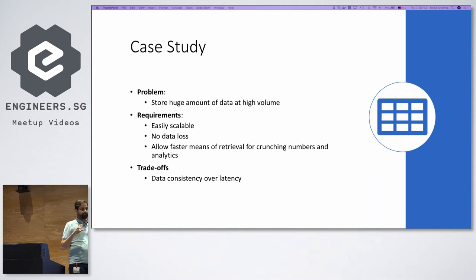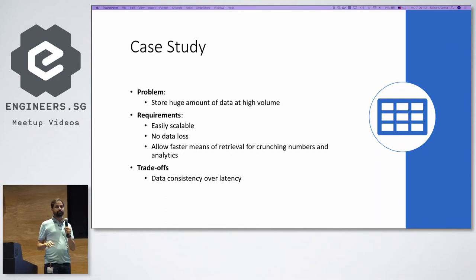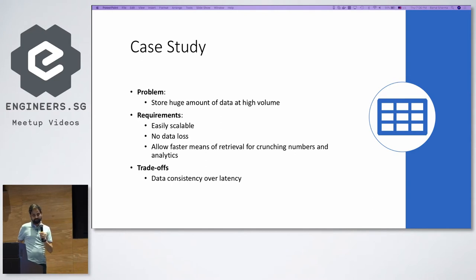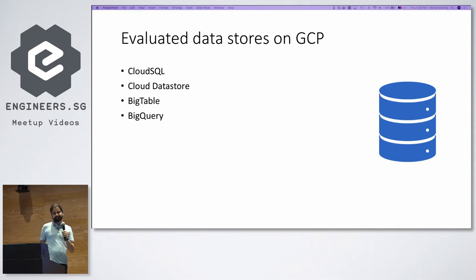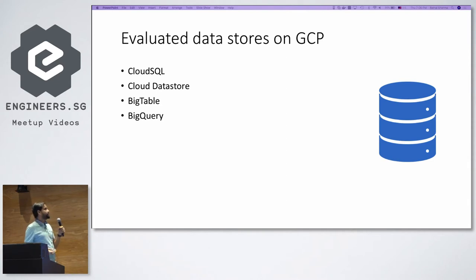Can I quickly have a show of hands — who has worked with Google App Engine before? Okay, still very few people, so I'll go into more basic stuff as we go through. These were the evaluated data stores on GCP. At that point, Cloud Spanner was not available or maybe in beta, so the four main storage options were Cloud SQL, Cloud Datastore, Bigtable, and BigQuery.